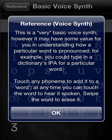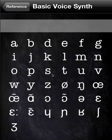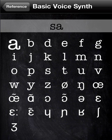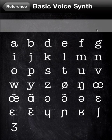We'll go to the final reference section. Just a cautionary note: this is a very basic voice synth. The intended purpose is, if you look in the dictionary and you see IPA symbols, you can type them in here to get a very rough idea of how the word would sound. You click it to hear all the phonemes together, and when you're done, you can just swipe and erase it. It's a very basic voice synth, but it might be useful.